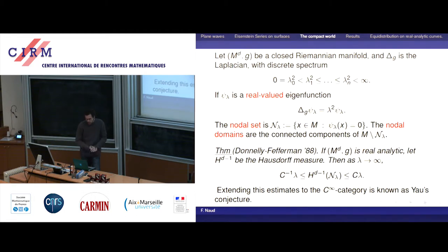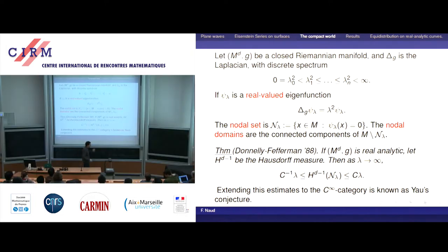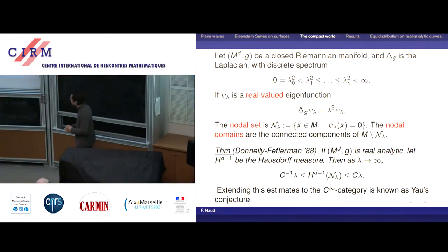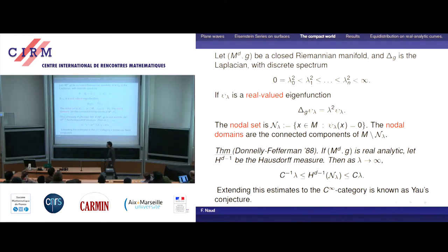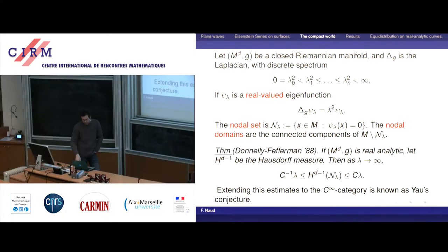Before stating actual results on Eisenstein series, it's important to have in mind what's known for compact manifolds, because there is a full industry on nodal lines, nodal domains, and so on for compact manifolds. It's important to put things into perspective. Let's look at the compact world. Take a compact manifold with Riemannian metric, Laplace–Beltrami operator, discrete spectrum, and so on.